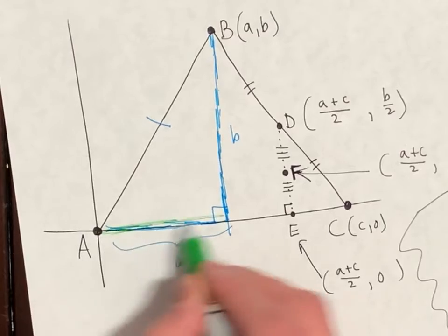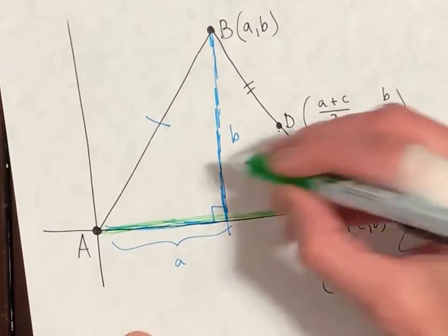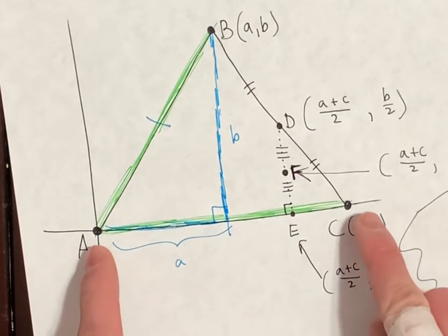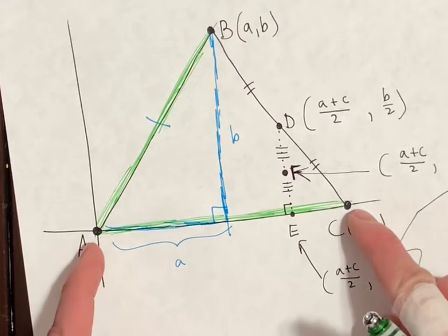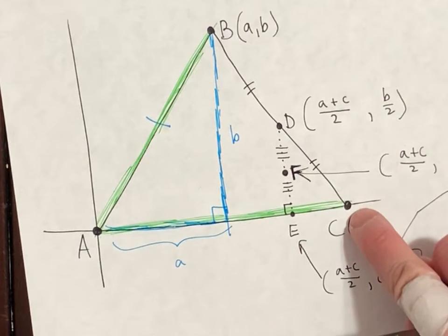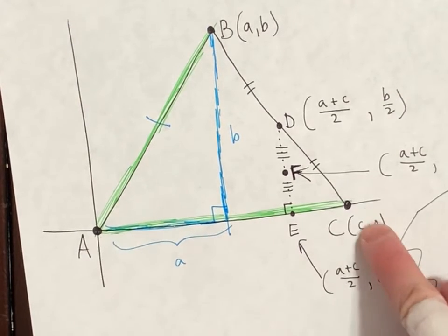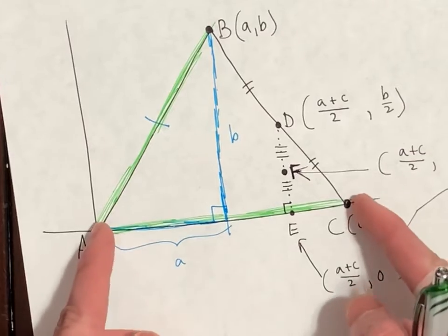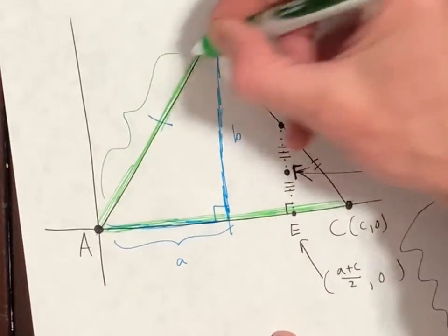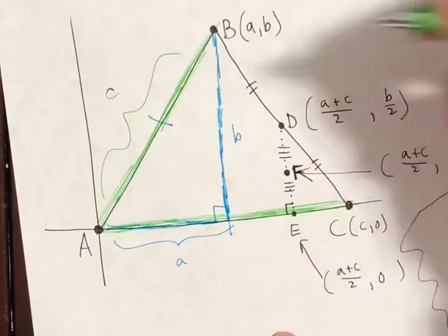They were saying that AC is the same as AB. Now what's the length of AC? The length of AC has to be little c, because point C is located at little c, comma 0. So because this green has a length of c, that means this green also has a length of c.